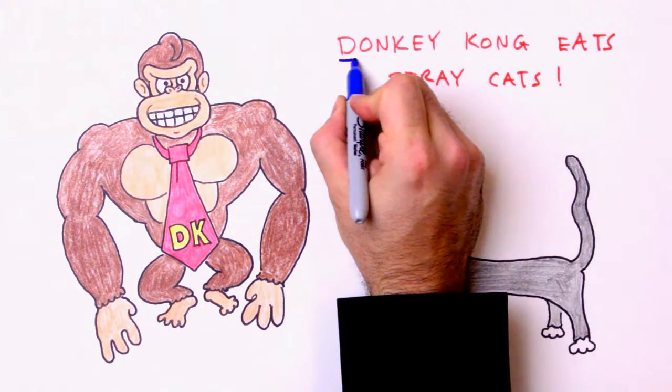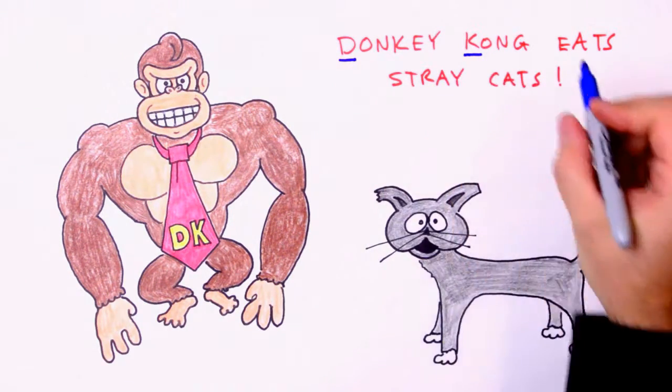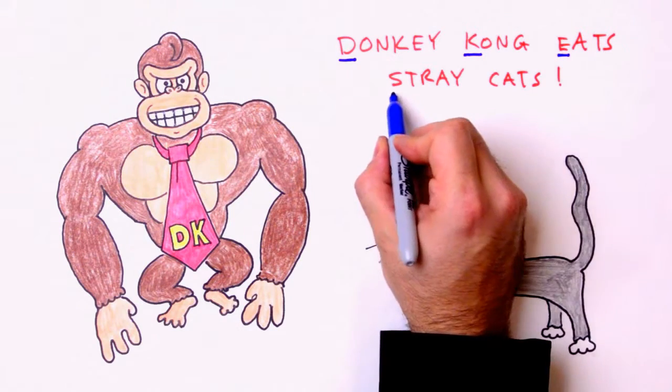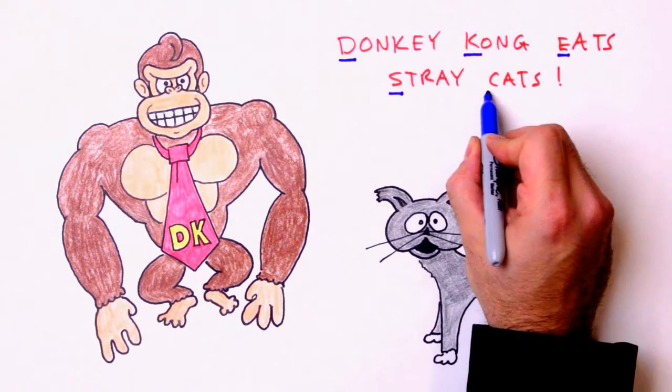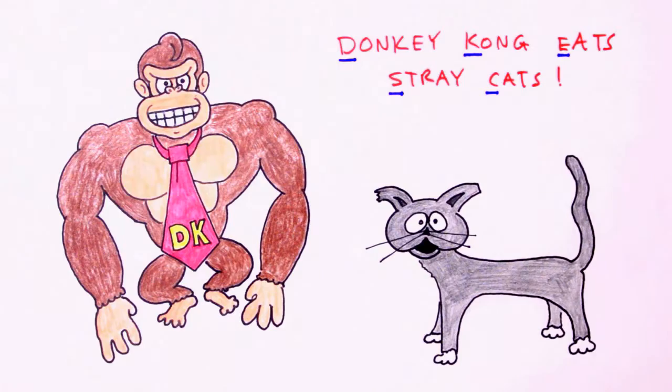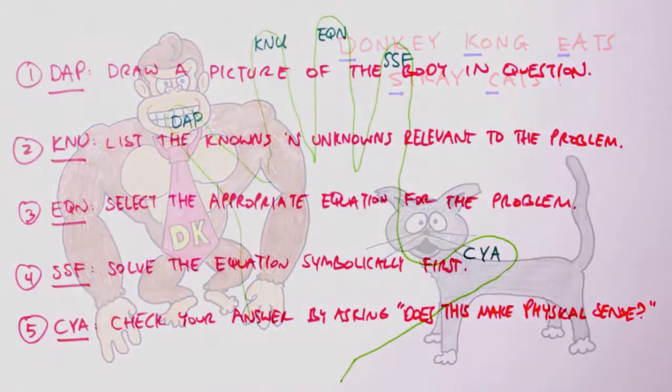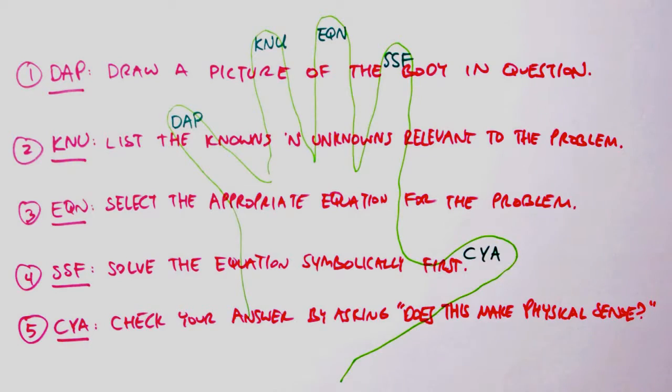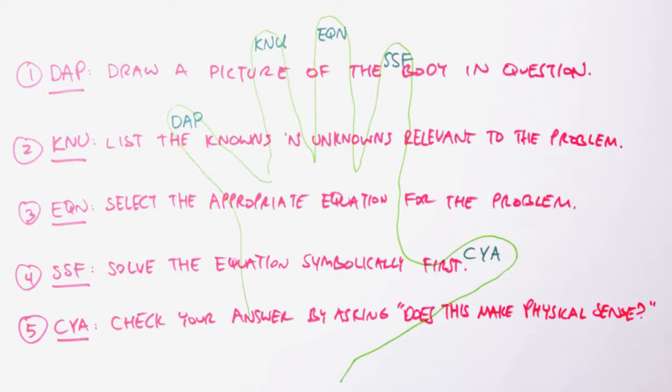So there it is. Draw a picture, knowns and unknowns, equation, solve symbolically first, and check your answer. Donkey Kong eats stray cats. I'm Jesse Mason. I hope you find this problem-solving method as helpful as I do, and that you employ it with each and every problem you encounter. And until next time, happy learning.